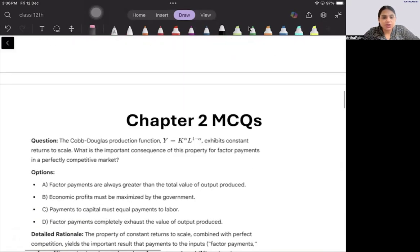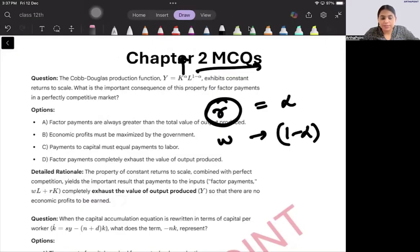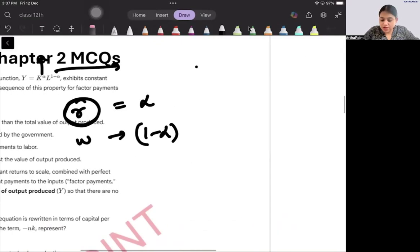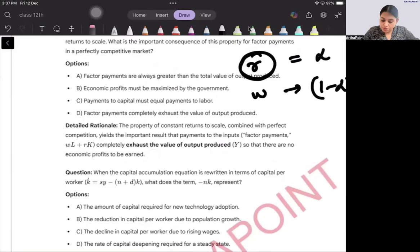Next question: In the Cobb-Douglas model, exhibits constant returns to scale. What is the important consequence of this property on factor payment? Because this is constant returns to scale, we know that the amount which goes as rent is this proportion alpha and as wage is 1 minus alpha proportion of the total income. We also know that the total value of output is equal to the amount of rent paid plus amount of wage rate. The entire output is exhaustive, so the answer is going to be D: factor payment completely exhaust the whole value of output.